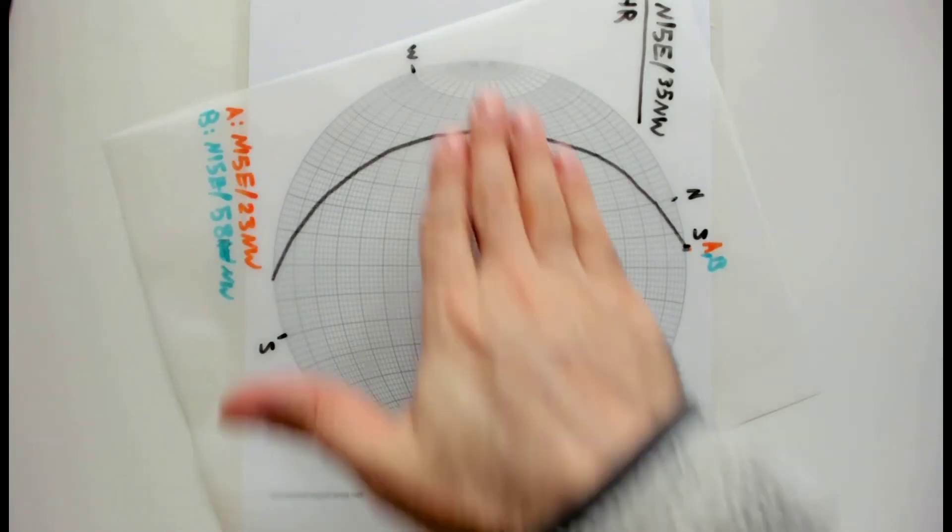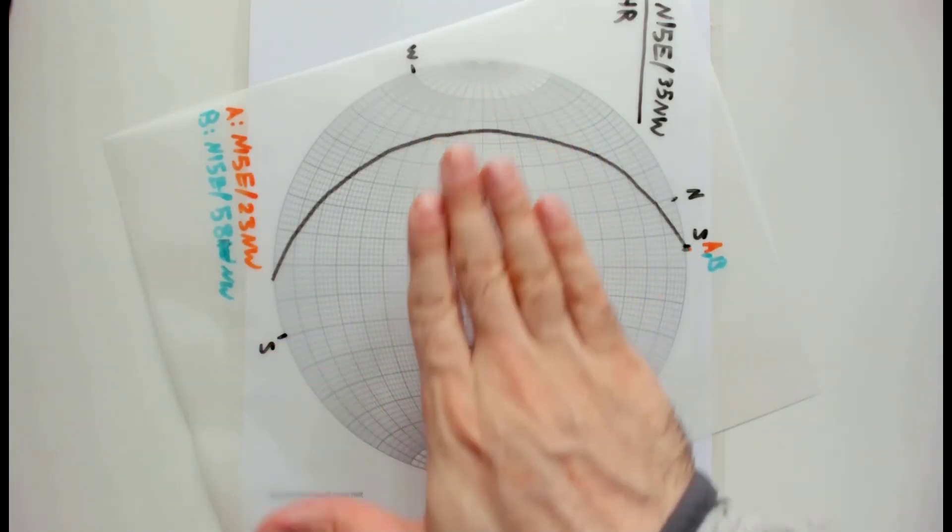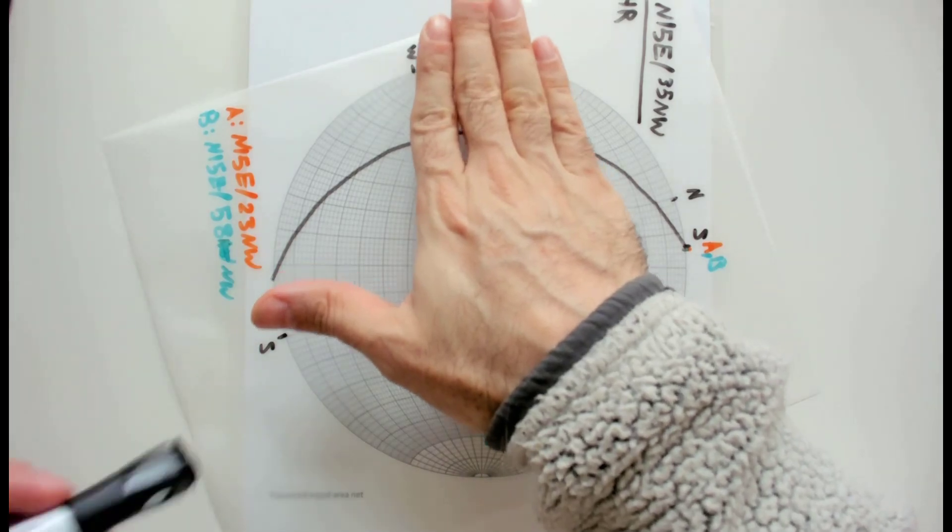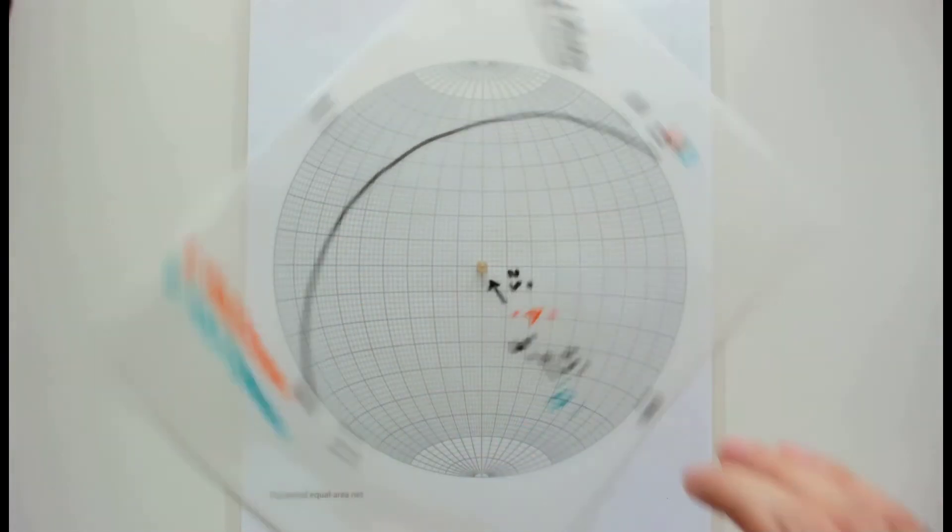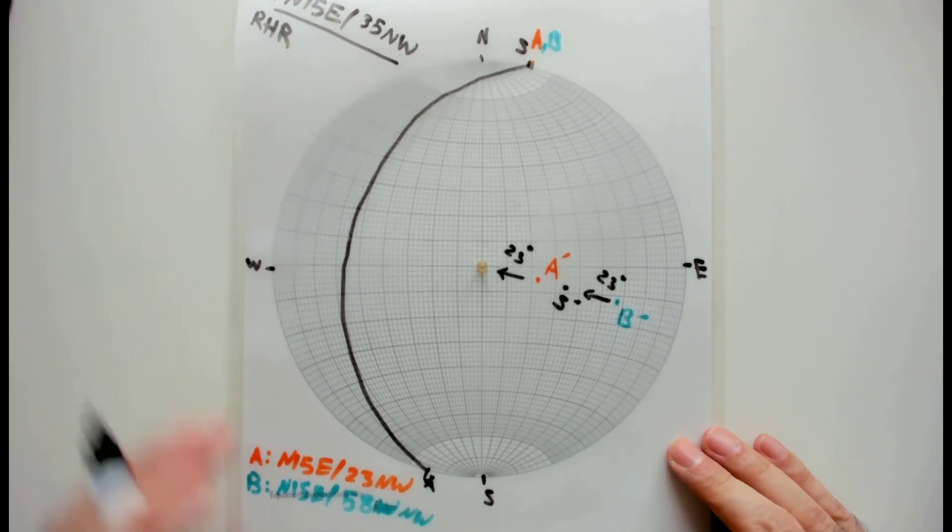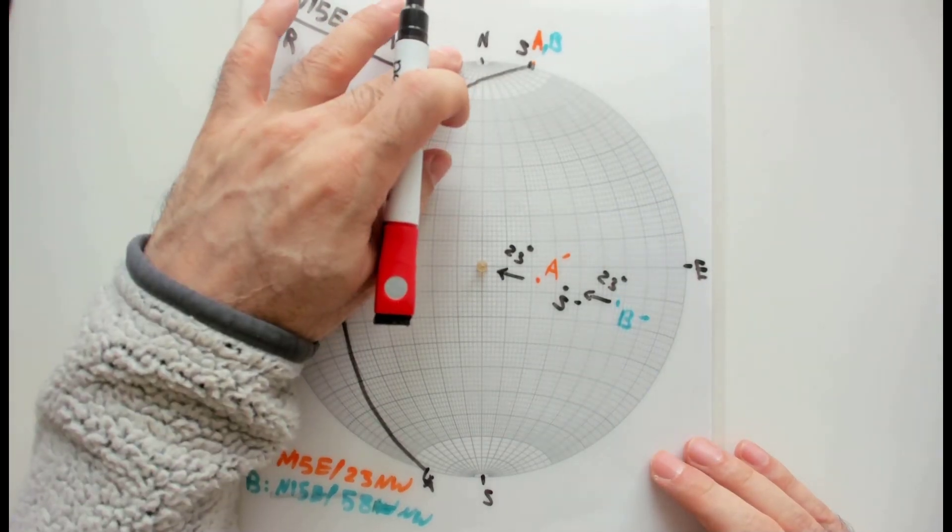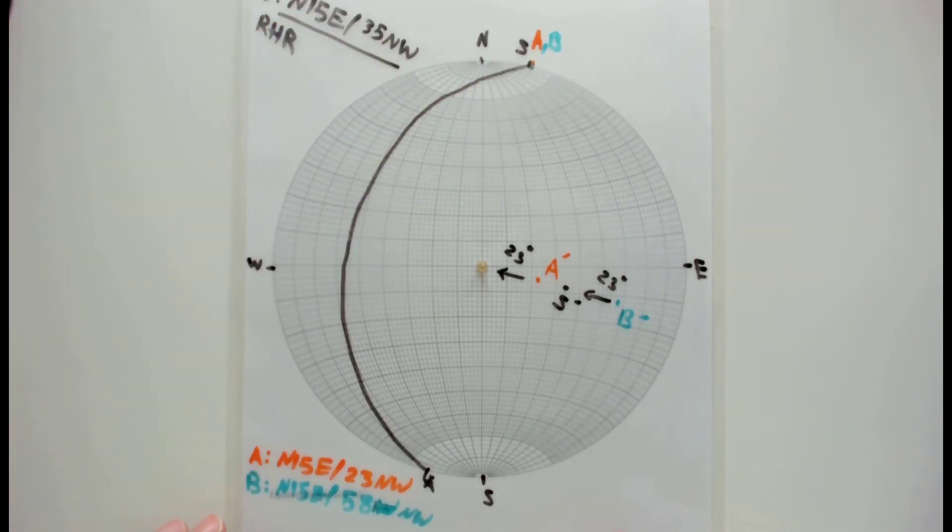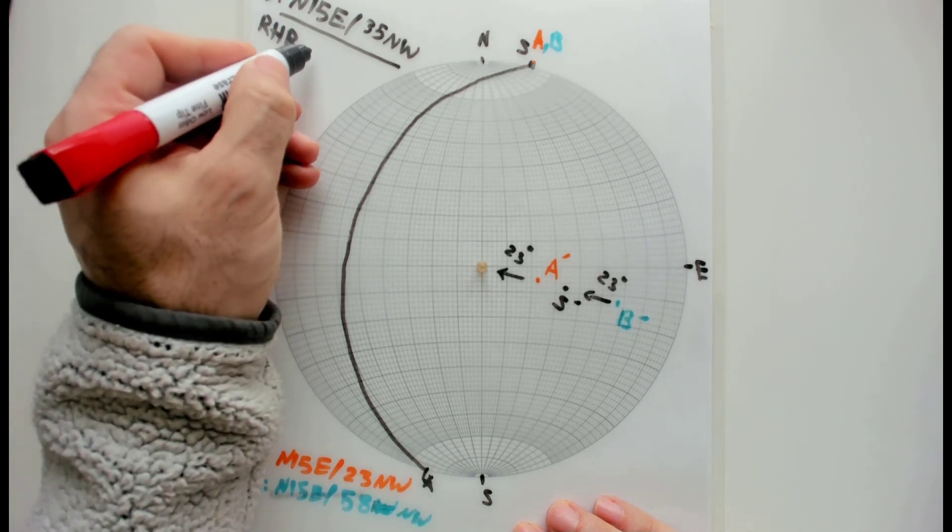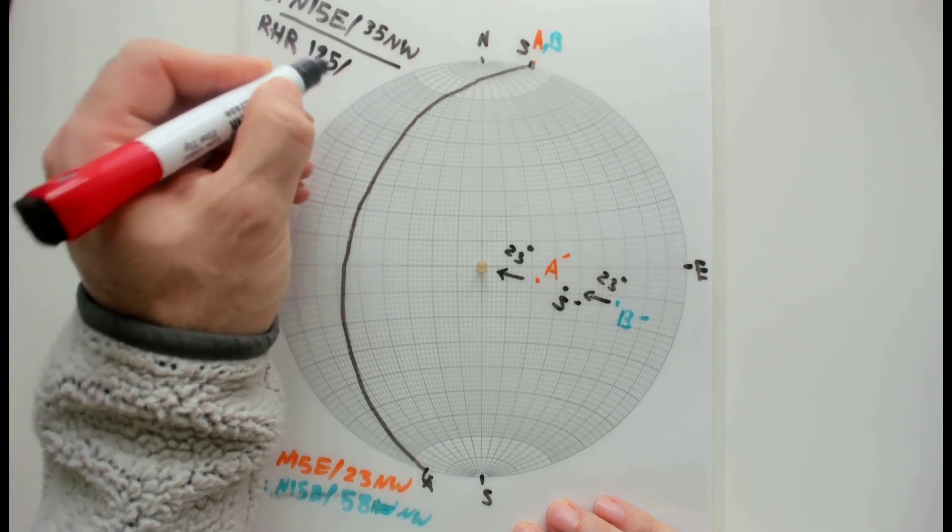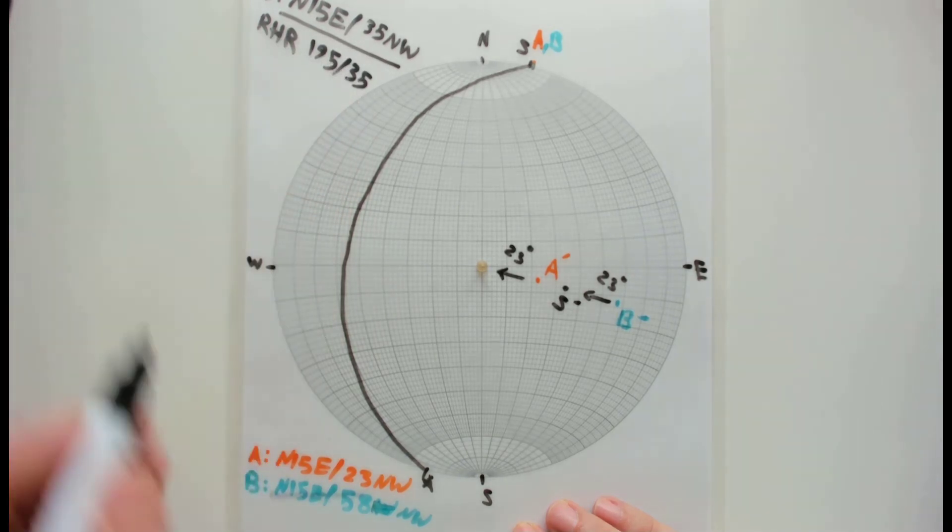So again, if you want to write in this way, or if you want to do it in the right-hand rule, then it's the same thing. This is the dipping direction, four fingers parallel with that, and this is the one that you should write. So you place the vellum paper on the north of the stereonet, and this is about 180, 190, 195. So I can write 195/35, and that's going to be the solution for this question.